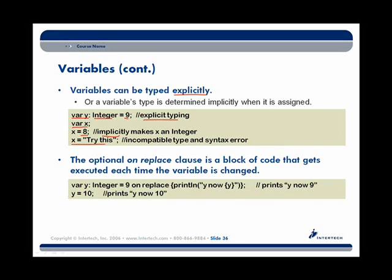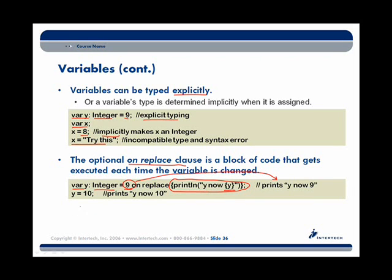There's also a neat feature when defining variables using var or def: the onReplace clause. This allows us to set up some code to run each time the value of a variable is changed. For example, with var Y defined as an integer with an initial value of 9, we can use the onReplace clause to run a code block every time Y's value is set. Using a println with Y in curly brackets will print the value of Y every time it changes — even on initialization it prints 'Y is now 9', and when Y is set to 10 it prints 'Y is now 10'.